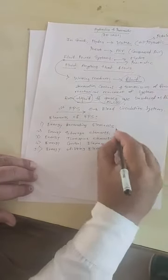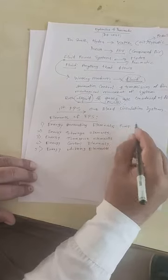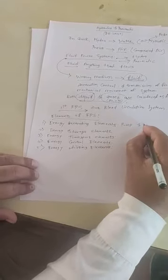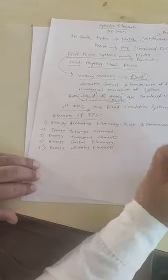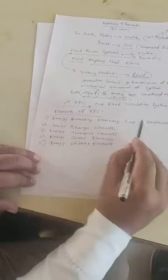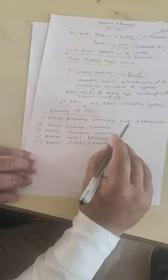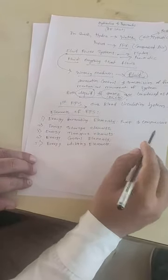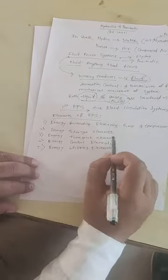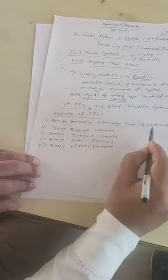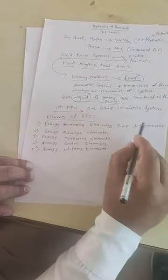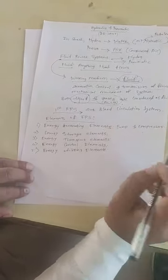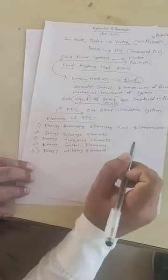The examples of these are pump in case of hydraulic system and compressors in case of pneumatic system. These are the sources by using which energy is generated in the system. These are the energy generating elements that provides pressurized fluid to the system. After that, that pressurized energy of fluid is converted into mechanical energy as we have discussed earlier.